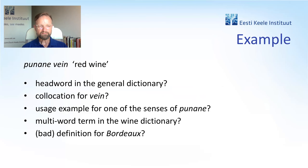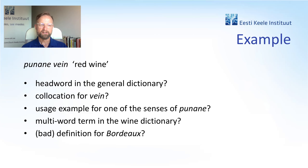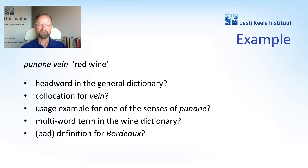As an example, the Estonian for red wine is Punannevein. It does have its own article in the general dictionary. We currently don't have a wine dictionary, but if we did, it would probably be a headword there as well. Only recently it was a collocation for vein, and it was removed from there for this very reason — that it was already a headword, so it didn't make sense to have it in both places. It could also be a usage example for one of the senses of Punannevein, or red — the dark red kind. And it could also be a definition for a type of wine, Bordeaux for instance.